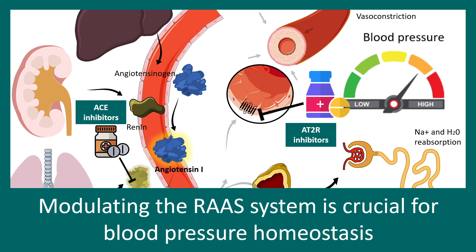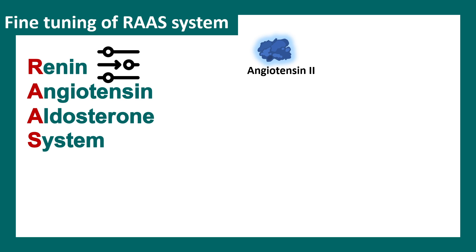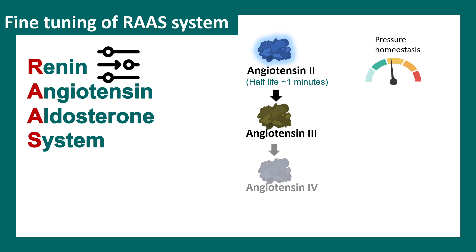Overall, the goal of the RAS system is to regulate blood pressure homeostasis. The renin-angiotensin-aldosterone system is a tightly regulated system that needs to be fine-tuned — too much is bad, and too little is also bad. Angiotensin-2 has a short half-life of less than a minute, meaning it gets converted to less potent forms such as angiotensin-3 or angiotensin-4. This is how pressure homeostasis is maintained.